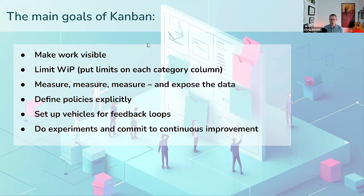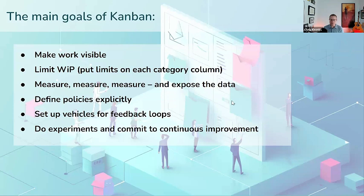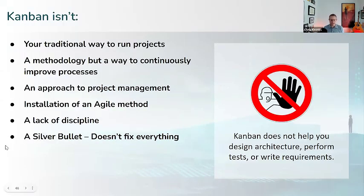The main goals of kanban are: make work visible; put limits on each lane or column of work so we manage each phase more intelligently as it matriculates through the system; always measure so we can make things visible and expose data — there's a knowledge dividend if we expose that data; explicitly define policies so people's expectations are clear; set up disciplined, structured feedback loops; and do experiments so we can collect disciplined quantitative data on what's working and what's not.